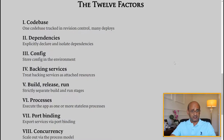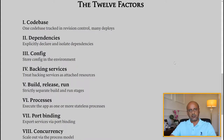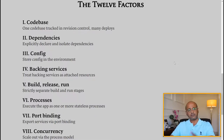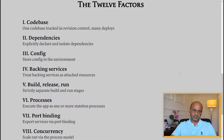Factor two is dependencies: explicitly declare and isolate those dependencies. You do not want to mix everything up, so make sure you're clear on which code is dependent on which. Factor three is to store your config in the environment — whether you're working in dev, production, QA, or any other environment, make sure you store the config files within those environments.